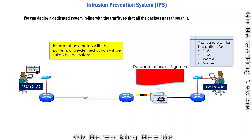In case of any match with a pattern for a potential threat, a predefined action will be taken by the system. The IPS can be configured to not allow that particular packet through — it will discard or block it. So in addition to detection, the IPS also performs an action. This means it is going to prevent our network from potential threats, and this is the main difference between IDS and IPS.